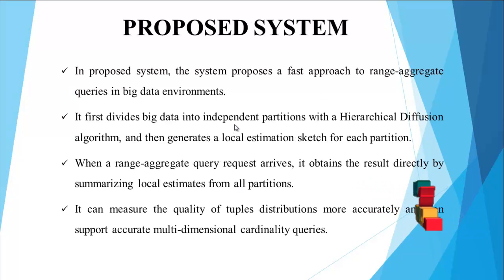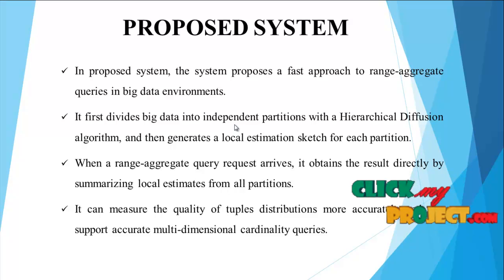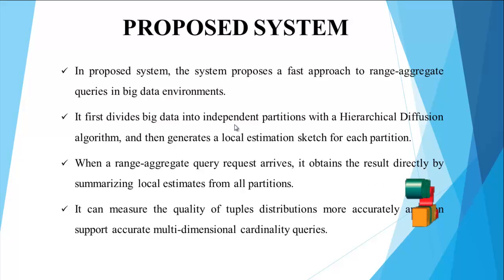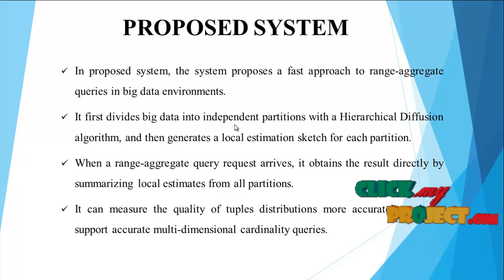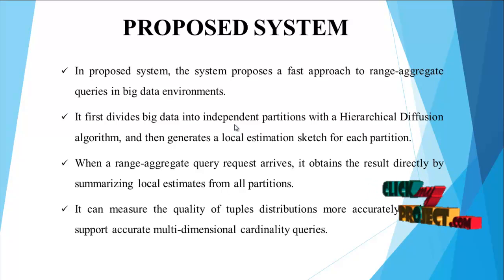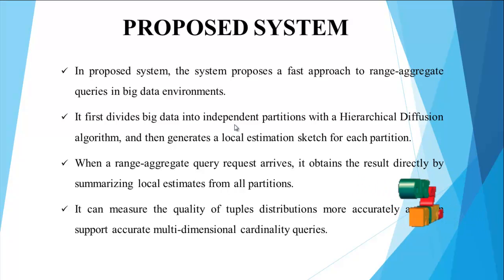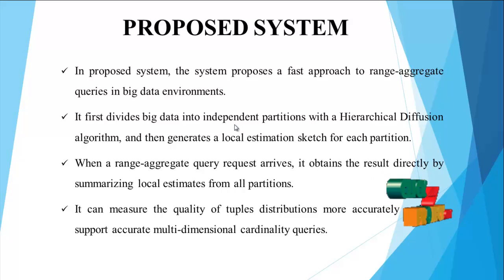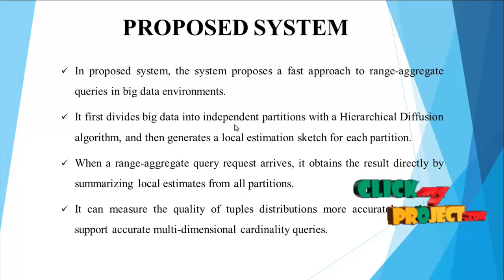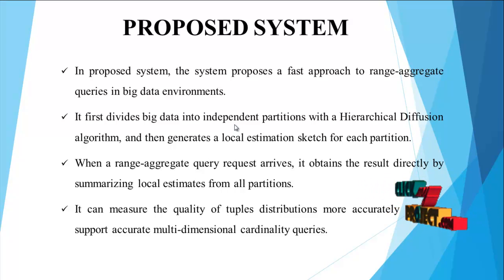In the proposed system, the system proposes a fast approach to range aggregate queries in big data environments. It first divides the big data into independent partitions using a hierarchical diffusion algorithm, then generates a local estimation sketch for each partition. When a range aggregate query arrives, it obtains the result directly by summarizing local estimates from all partitions. It can measure the quality of the tuples distribution more accurately and can support accurate multidimensional cardinality queries.